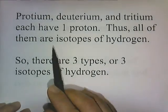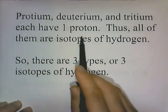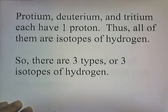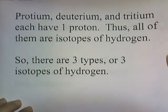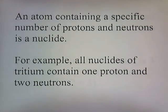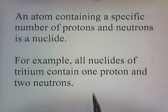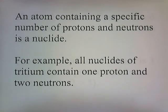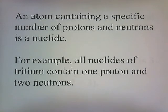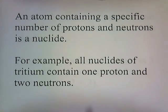To review: protium, deuterium, and tritium each have one proton, so all of them are isotopes of hydrogen — three types or three isotopes of hydrogen. An atom containing a specific number of protons and neutrons is called a nuclide. For example, all nuclides of tritium contain one proton and two neutrons, and a nuclide of protium would be just one proton.